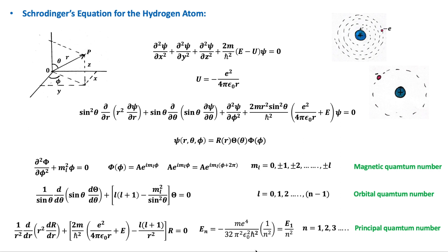For a particle in a three-dimensional box, three quantum numbers are needed because there are three sets of boundary conditions that the wave function must obey in each of the x, y, and z directions. A hydrogen atom is analogous to a particle in a 3D box, where the electron's motion is restricted by the electric field of the nucleus instead of the walls of the box. The electron is free to move in three dimensions within the restriction of the electric potential, so there are three sets of boundary conditions in each direction.